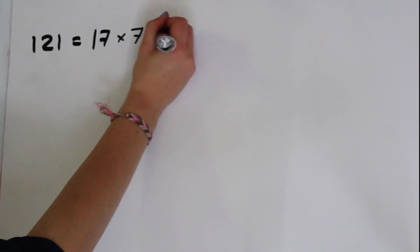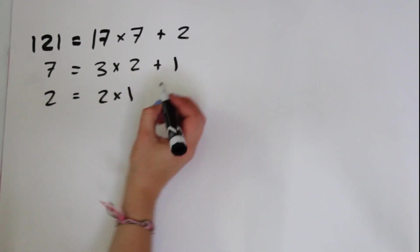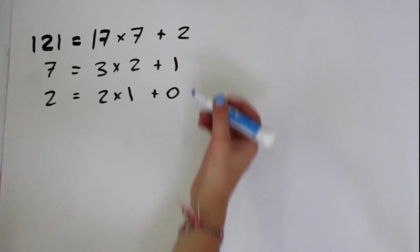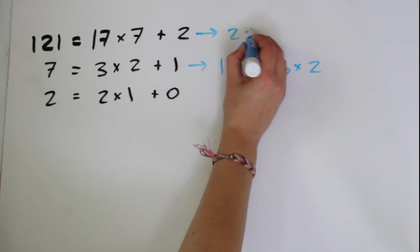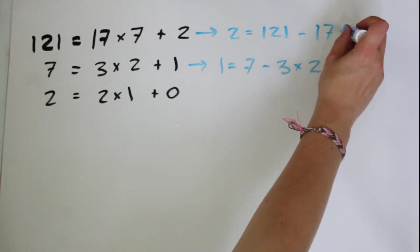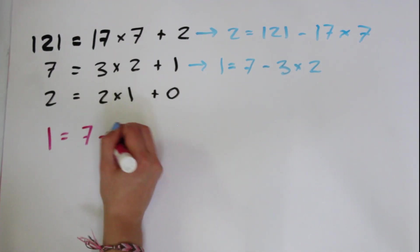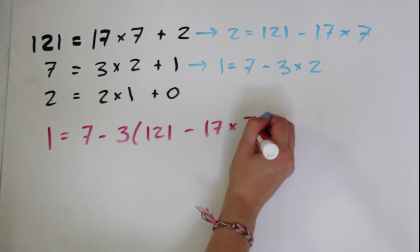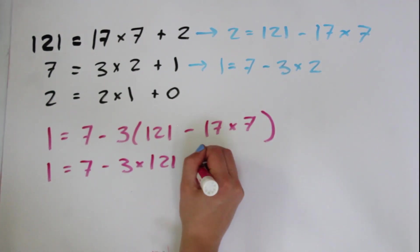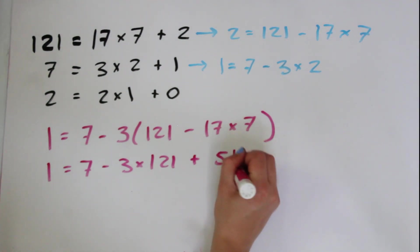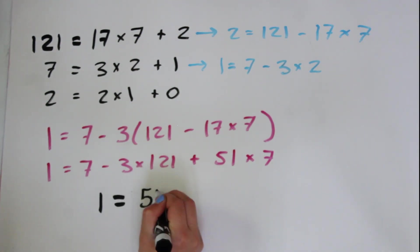So we can start by 121 = 17 × 7 + 2, 7 = 3 × 2 + 1, and 2 = 2 × 1 + 0. We can move around each of these equations algebraically. And we get out 1 = 7 - 3 × 2, but then 2 = 121 - 17 × 7. So plugging that in to the second equation, we get out 1 = 7 - 3 × 121 + 51 × 7. So 1 = 52 × 7 - 3 × 121.